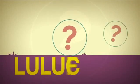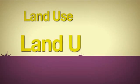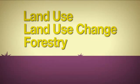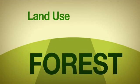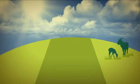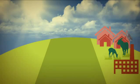Just what is LULUCF? It is land use, land use change and forestry. Let's look at these three terms. Land use is what people do to land. They turn lands into fields and pastures for their farm animals and build settlements for houses, offices and factories.